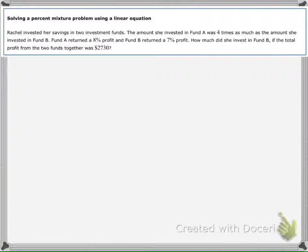In this problem we have Rachel investing her money into two separate accounts, Fund A and Fund B. She's going to earn 8% profit from Fund A, whereas Fund B will return a 7% profit. The question asks: how much did she invest in Fund B?